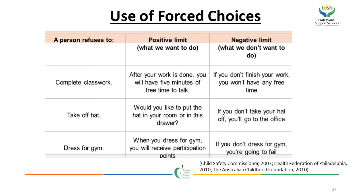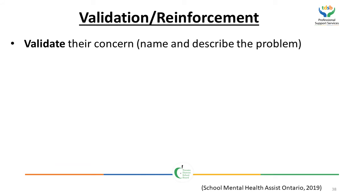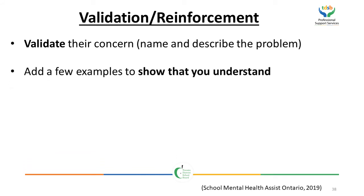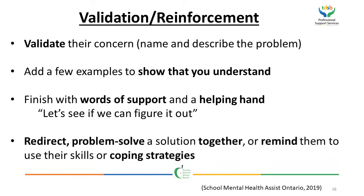An example of a force choice: if a student refuses to complete class work, a positive limit would be, 'After your work is done, you will have five minutes of free time to talk,' as opposed to a negative limit: 'If you don't finish your work, you won't have any free time.' Validation reinforces the student's concern by naming and describing the problem, adding examples to show understanding, and finishing with words of support and a helping hand — 'Let's see if we can figure it out.' Then redirect, problem-solve a solution together, or remind them to use their coping strategies.